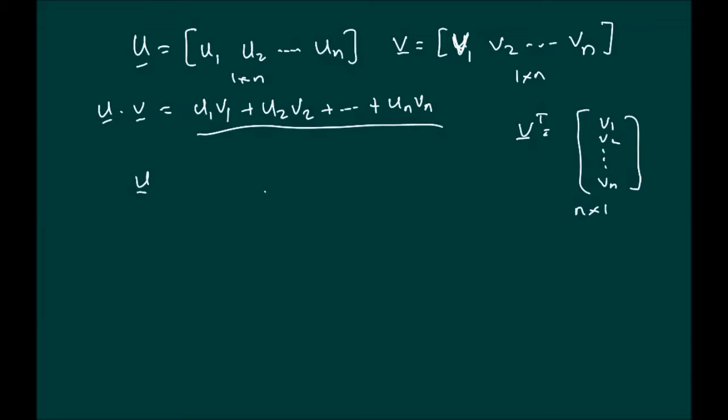So therefore, it seems that if we were to multiply U with V transpose, we would in fact end up with the following product: U1V1 plus U2V2 plus up to UnVn, which is in fact, U dot V.